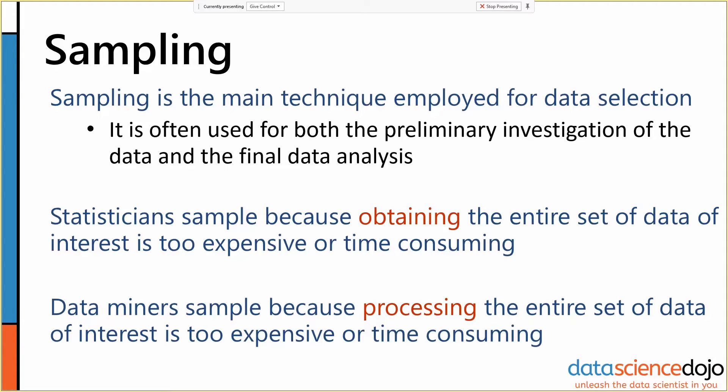Sampling is the main technique we use for data selection. It's used almost always for preliminary investigation of the data, but it's often used even for the final data analysis, even in data science.